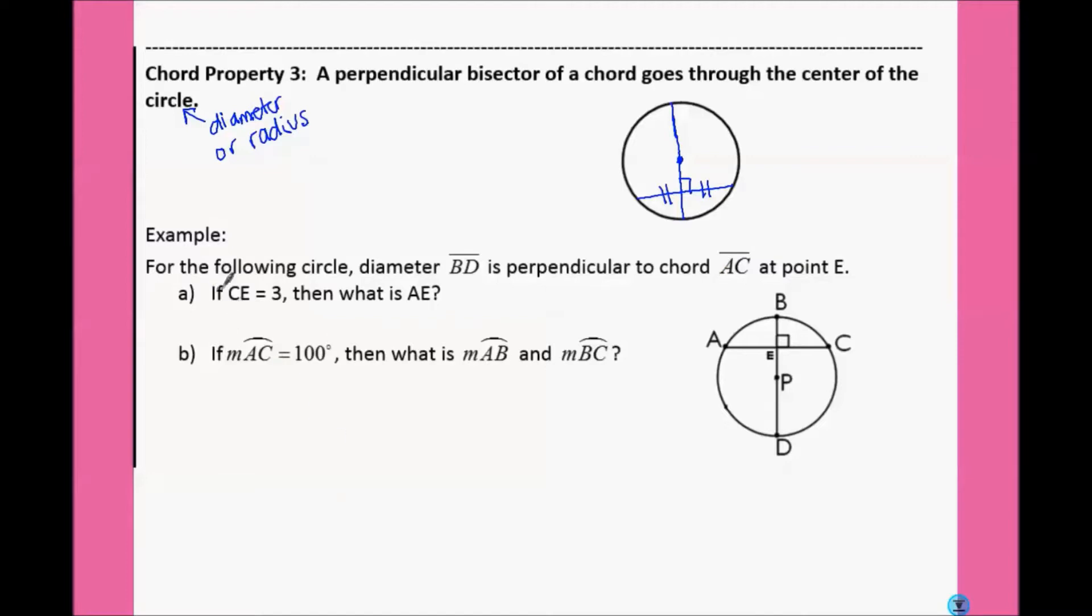So, if CE is 3, what's AE? Well, BD went through the center, and it's perpendicular, therefore AE and AC are going to be congruent, and therefore AE must also equal 3.